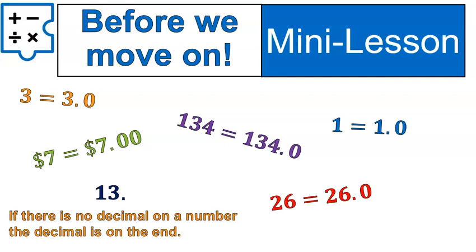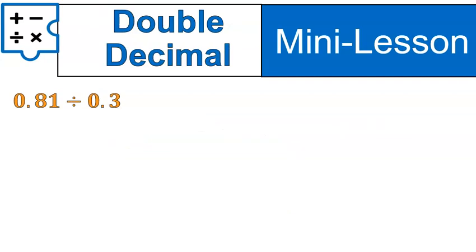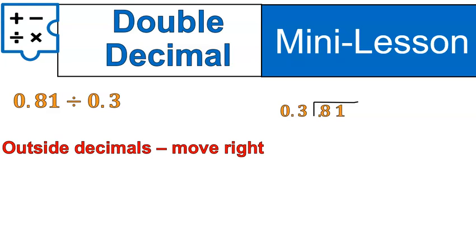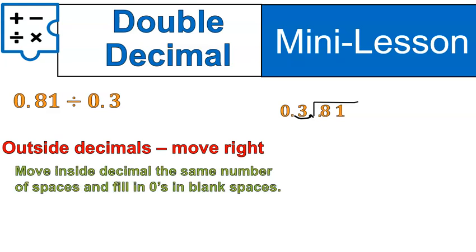Given all of that information, it's time to try out the double decimal question. Here we have it: 81 hundredths divided by 3 tenths. First off, we're going to start taking care of the decimal outside of that division symbol. And then we're going to move to the decimal on the inside. The outside decimal moves to the right. Therefore, the one inside is going to move that same number of spaces.